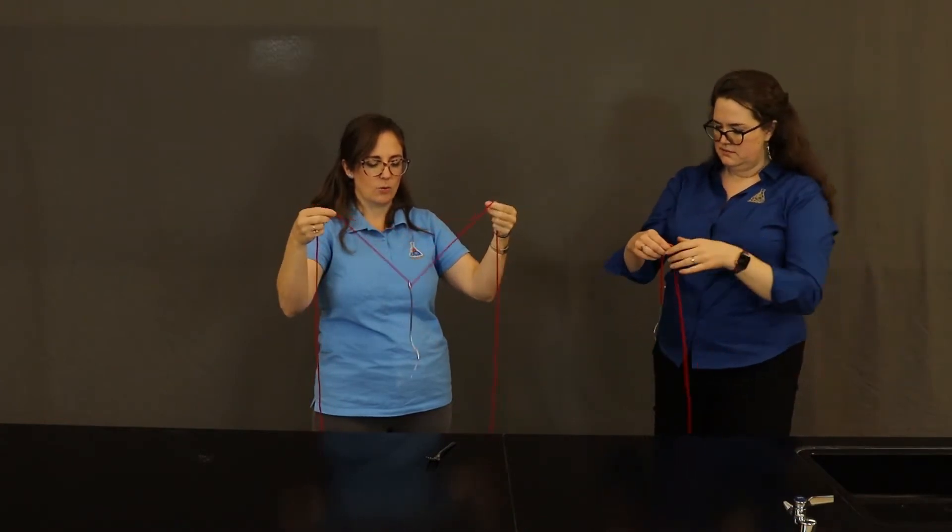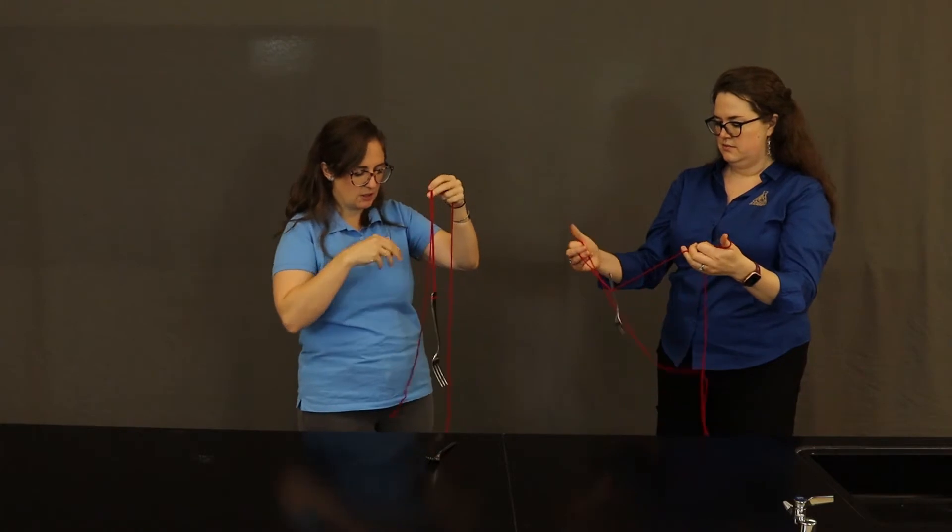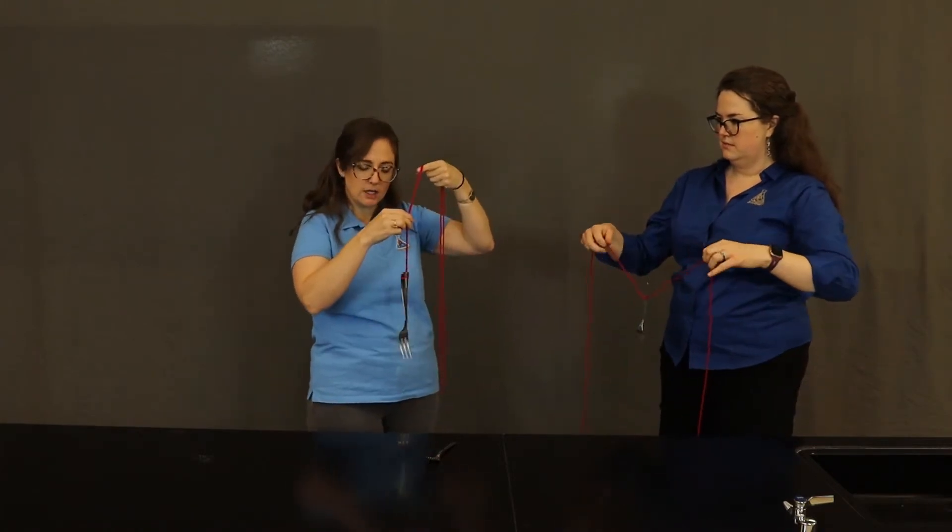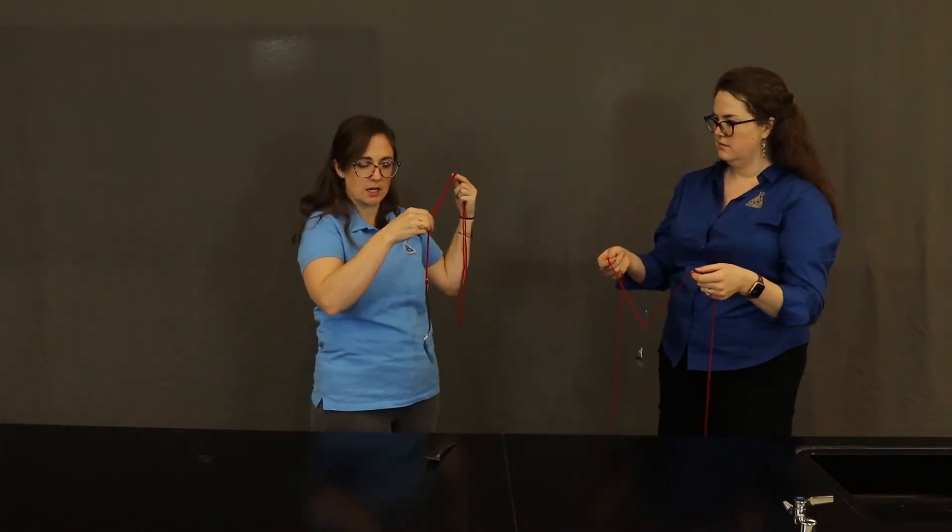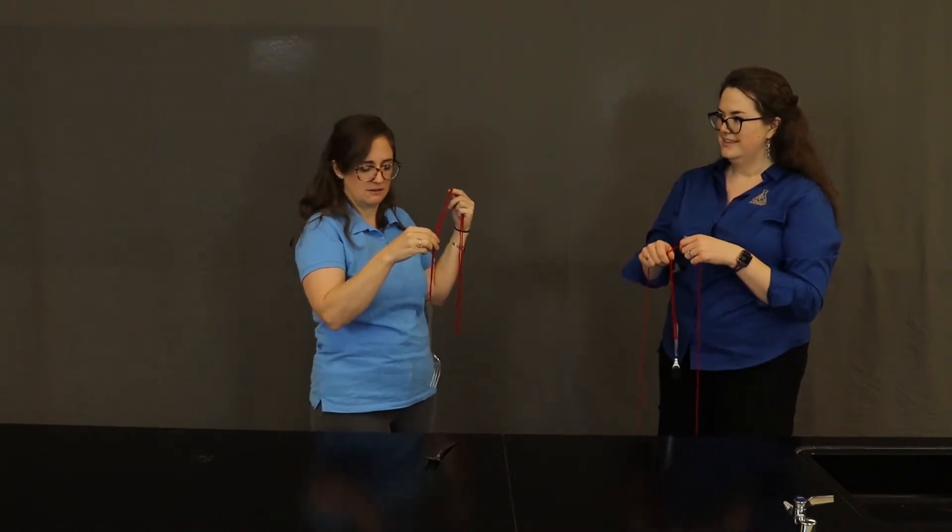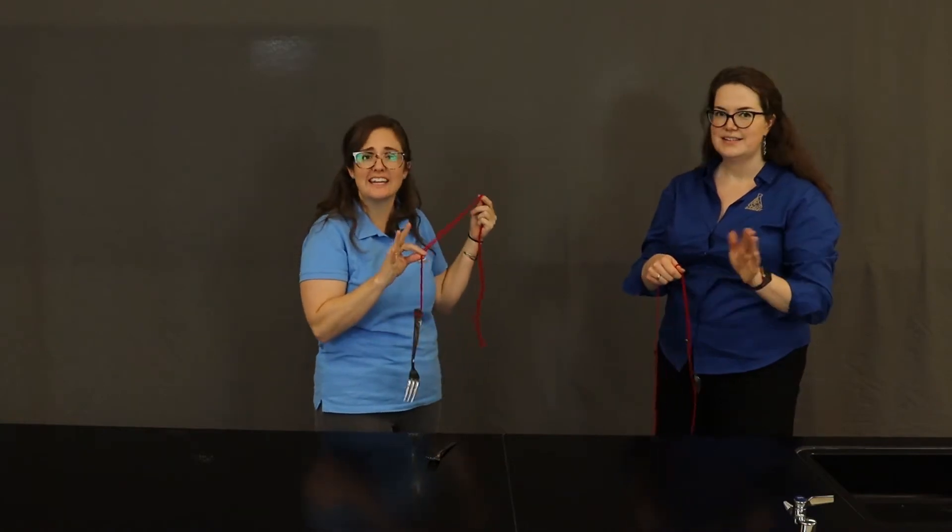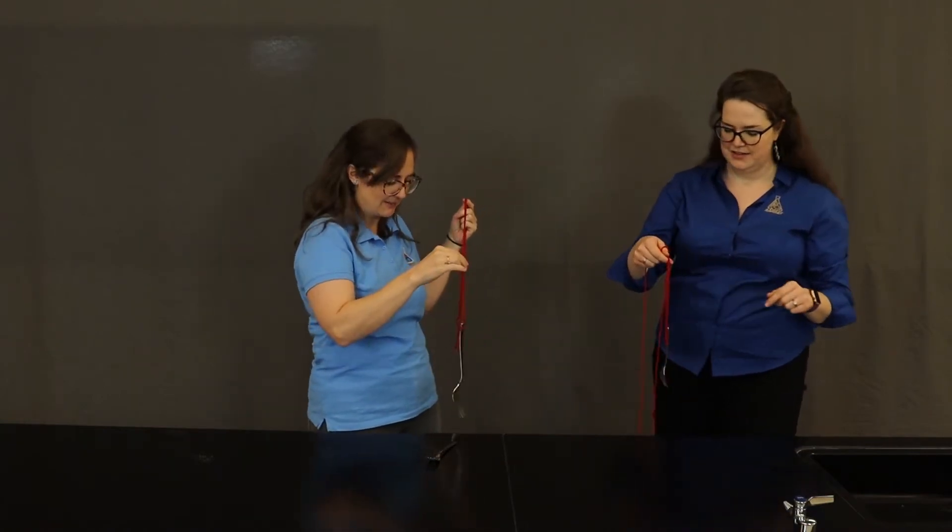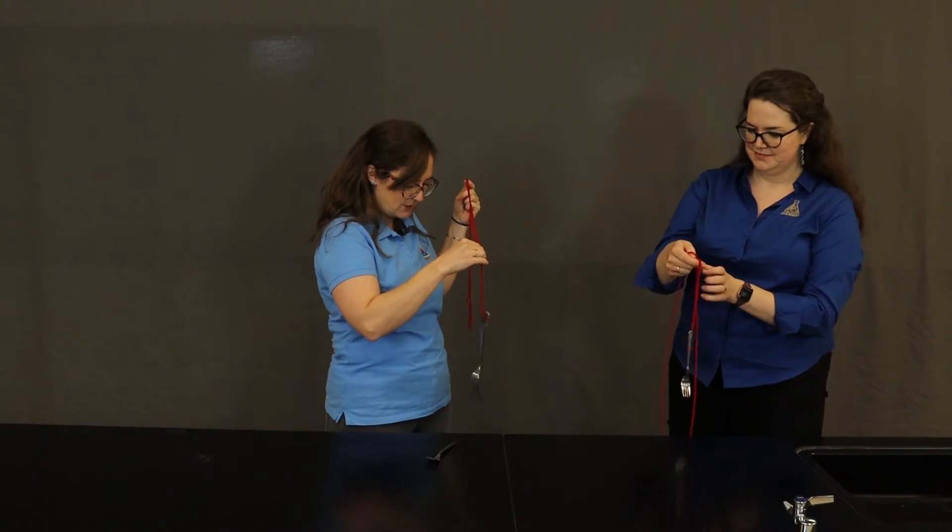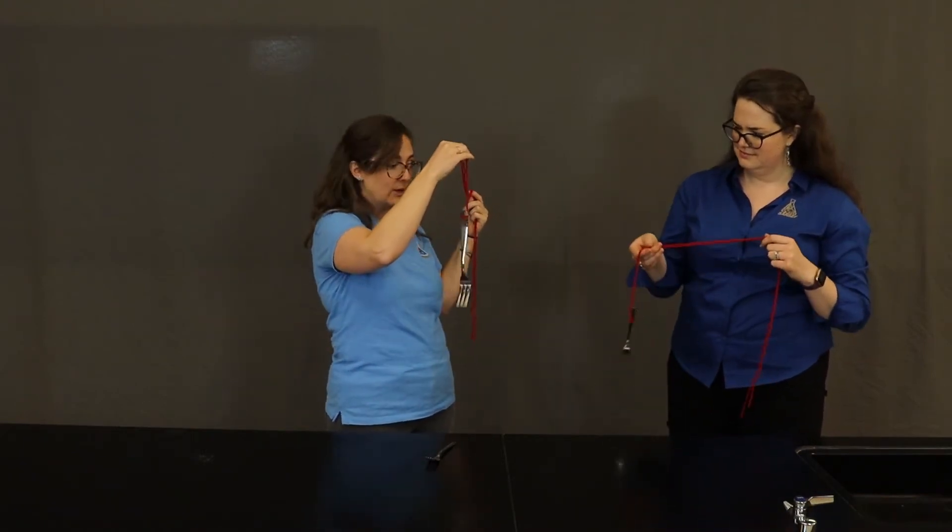All right. Now, what you're going to do is first, you're going to hit your fork against something hard. I have this nice hard table here. Make sure it's not a person. Okay. No, not a dog. No living thing. Okay. No living thing. Good. Okay. These are good things to clarify. All right. So you hit the fork. Oh, can you hear that?